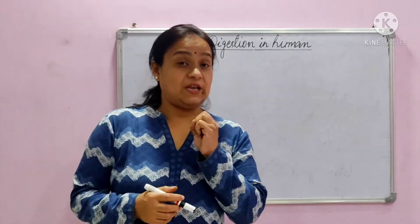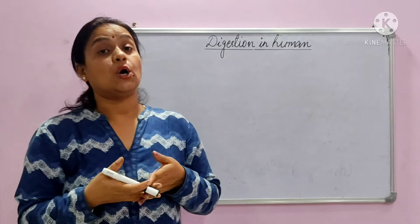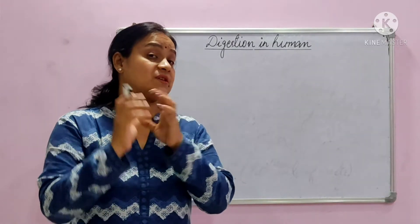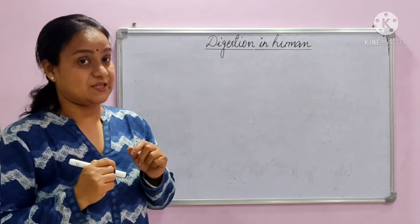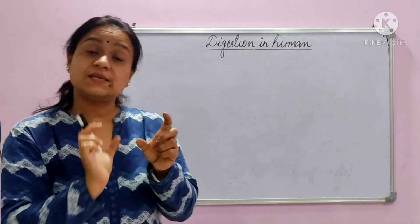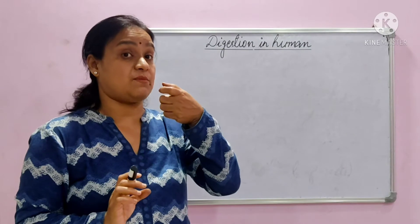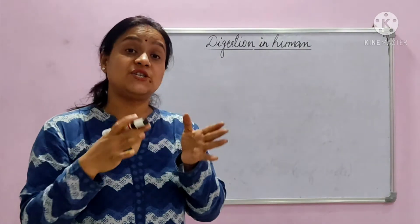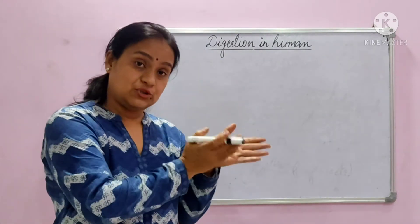Now let us understand the alimentary canal or the gut. The alimentary canal is a single tube which starts from the mouth. It runs all through the body, taking different shapes at different places, and ends at the anus.